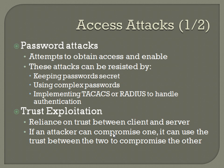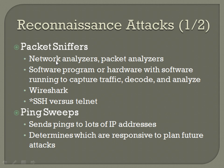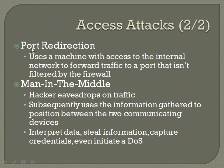If a server trusts a certain IP from a client or allows a client to access via a certain IP and protocol, and the hacker has accessed that client, he would be able to access that server on that same IP and protocol. Port redirection uses a machine with access to the internal network to forward traffic to a port that isn't filtered by the firewall. For example, you can set up a proxy server on a separate port to circumvent whatever firewall is in place — if they block port 80, set it up so you can access it on a port other than 80 that is not blocked.